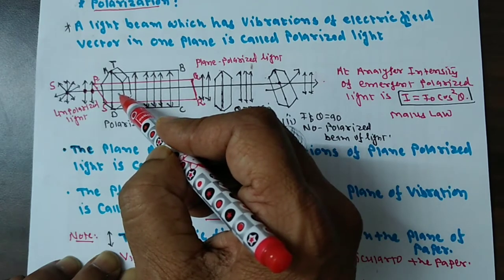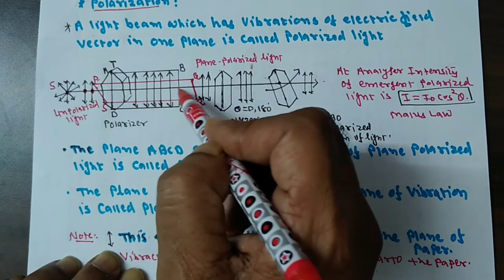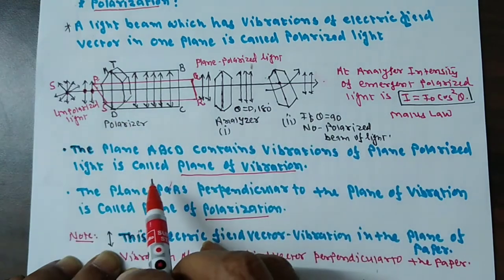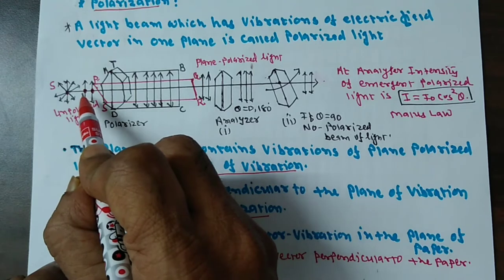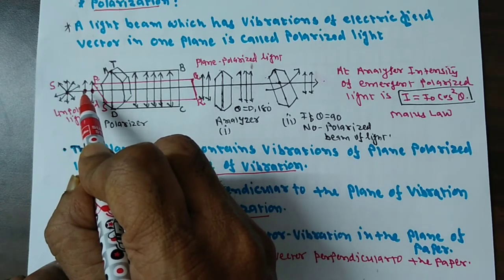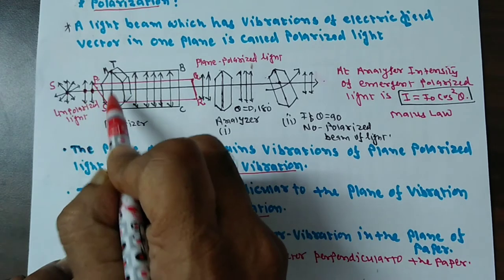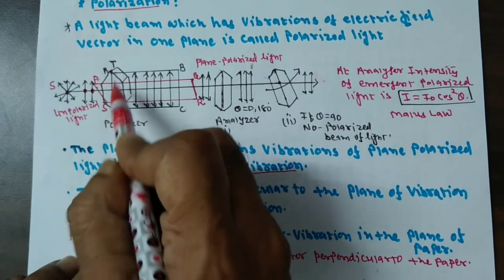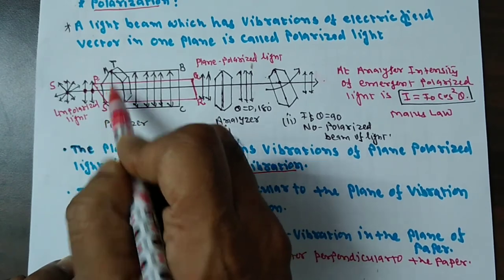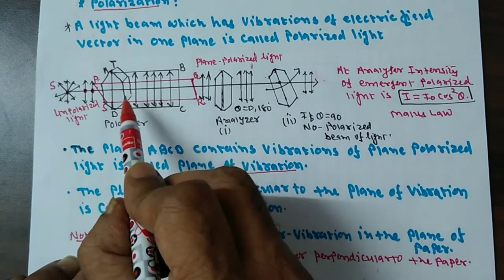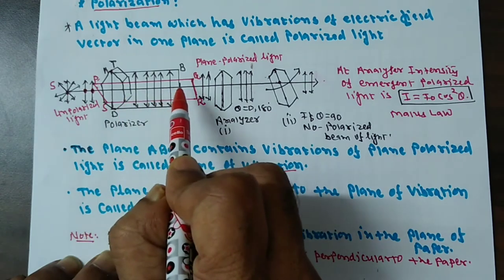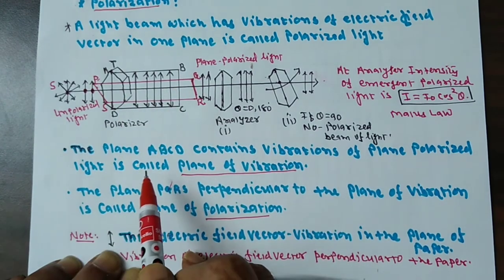The working of the tourmaline plate is to produce plane polarized light. Electric field vector vibrations that are perpendicular to the optic axis do not pass through — they will be blocked. In this way, we can get plane polarized light.